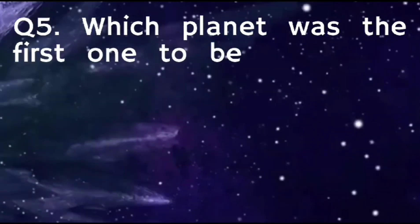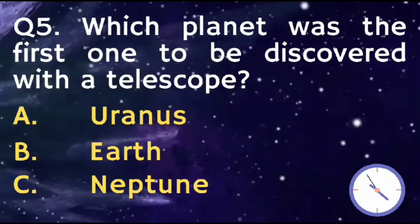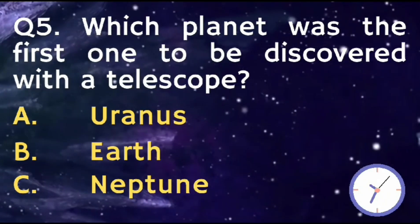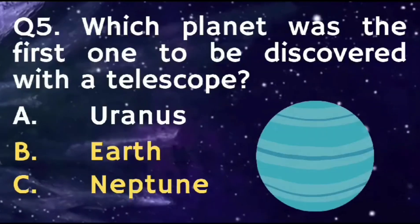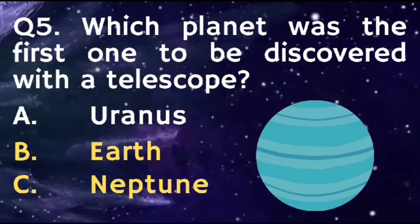Which planet was the first one to be discovered with a telescope? The right answer is Option A, Uranus.